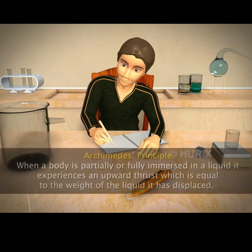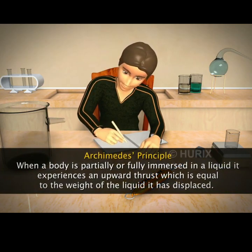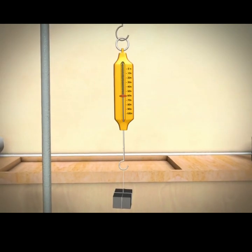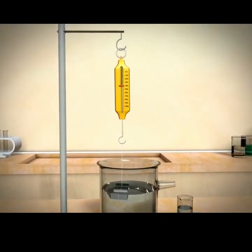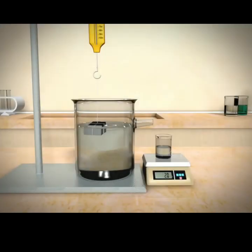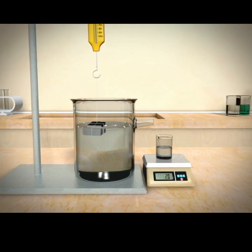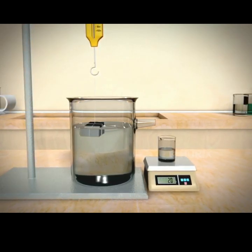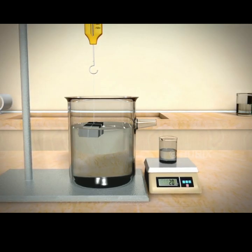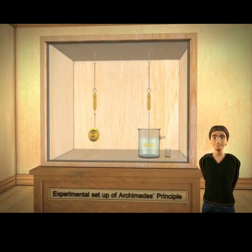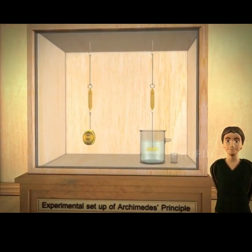Now, recall Archimedes' principle. The cube weighs 60 N. When it is immersed in the liquid, its weight changes to 40 N. This is because it experiences an upthrust of 20 N. According to the principle, this upthrust should be equal to the weight of the water the cube displaces. As expected, the weight of the water displaced by the cube is 20 N. So, we have successfully verified Archimedes' principle.